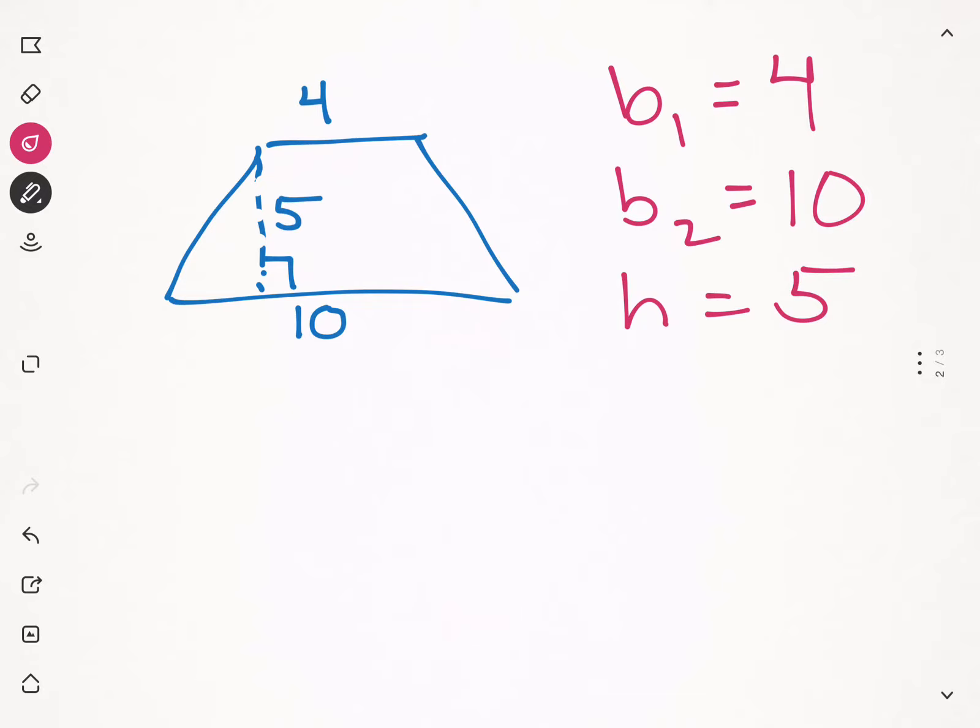Now, in parallelograms, we just did base times height, and that gave us the area. Let's look at what happens if we do that here. What if we decide that four is our base, and five is our height, and we find the area of that rectangle right here? So I'm going to say the area of the small rectangle. Four times five would give us what, Libby? Four times five is twenty. Twenty.